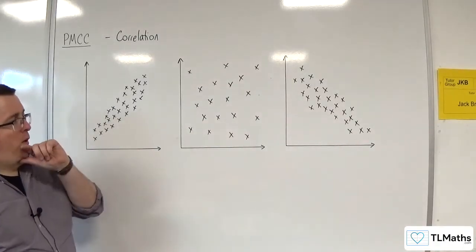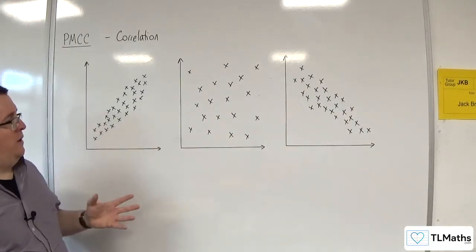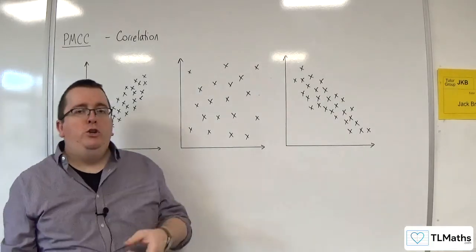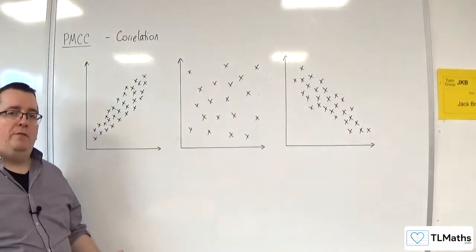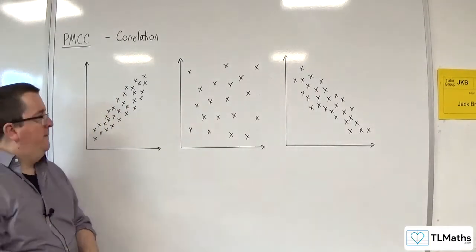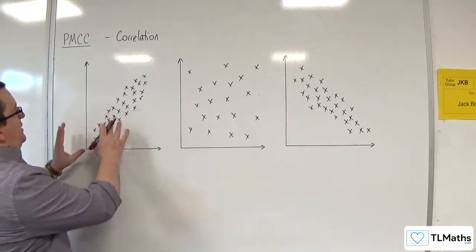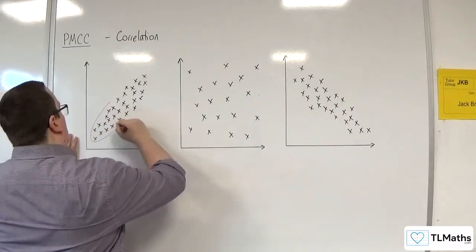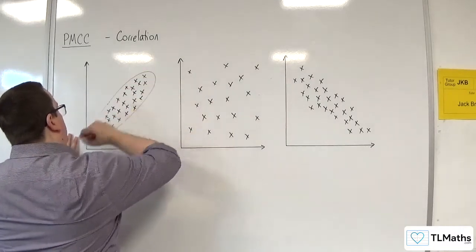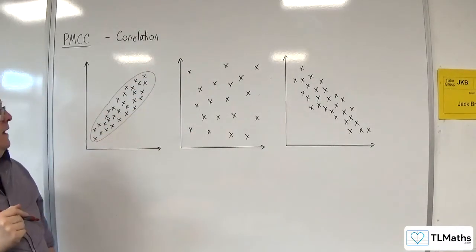Now, when we are talking about scattergraphs like this, what you should be on the lookout for is whether the data is roughly elliptical. So this data here is roughly elliptical, because I can draw an ellipse around the majority of the data like that.